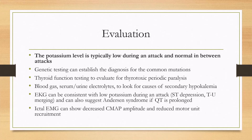For evaluation, during an attack the potassium level is typically low, and it can be normal in between attacks. Genetic testing, if the diagnosis is suspected, can confirm the diagnosis if they have one of the common mutations. Thyroid function testing is done to evaluate for secondary causes of periodic paralysis, such as hyperthyroidism.